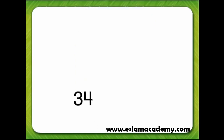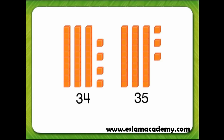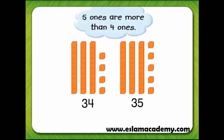Now let's compare 34 and 35. 34 is three tens and four ones. 35 is three tens and five ones. We have the same amount of tens, so we look at the number of ones. Five ones are more than four ones, so 34 is less than 35.